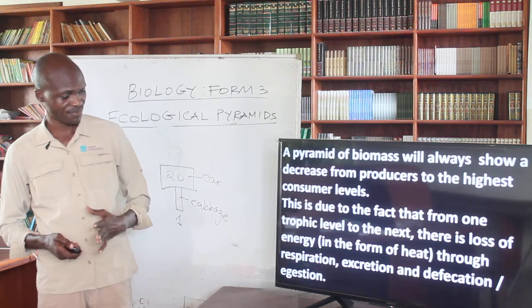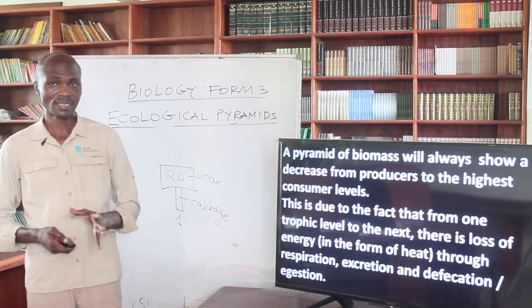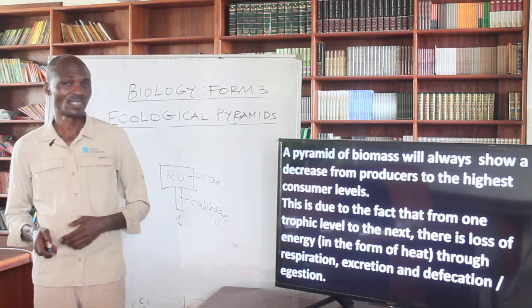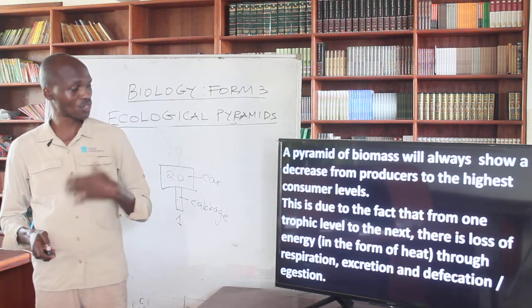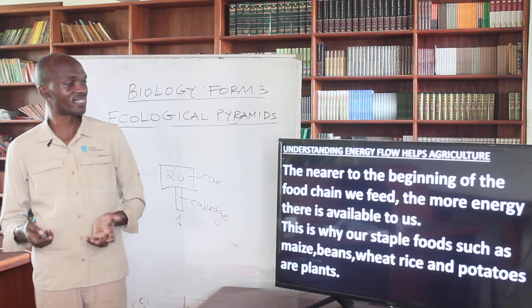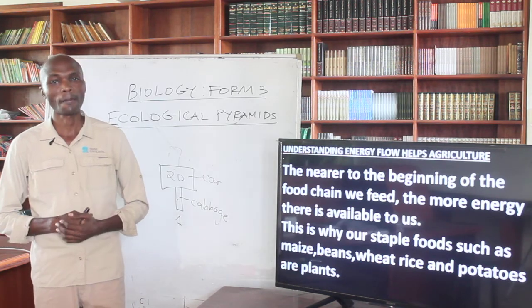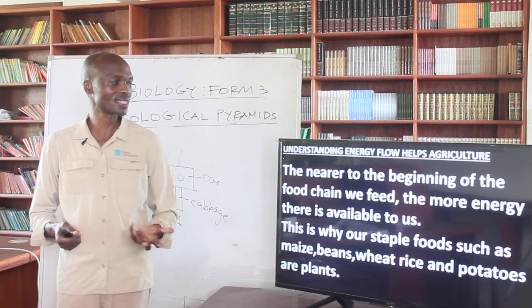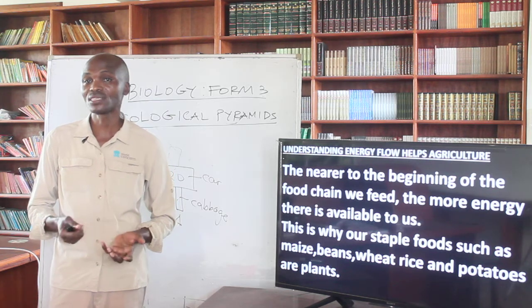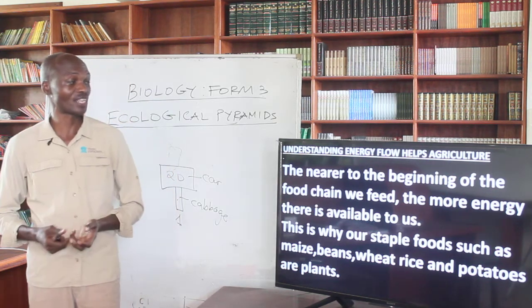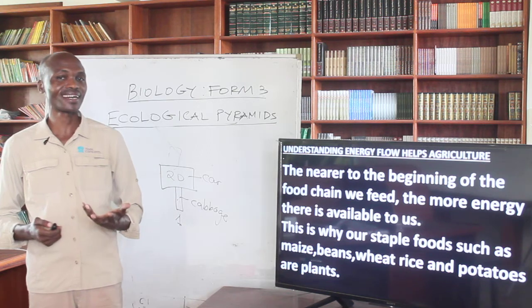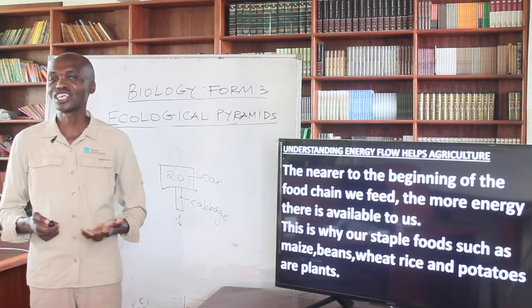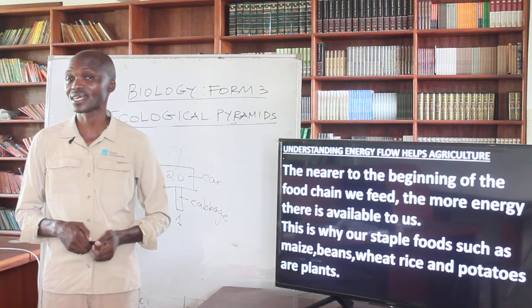When those processes take place, there is always loss of energy in the form of heat, so not all energy is transmitted from one level to the next. Lastly, we need to look at the importance of understanding energy flow in agriculture. The nearer we feed at the beginning of the food chain, the more energy is available to us.